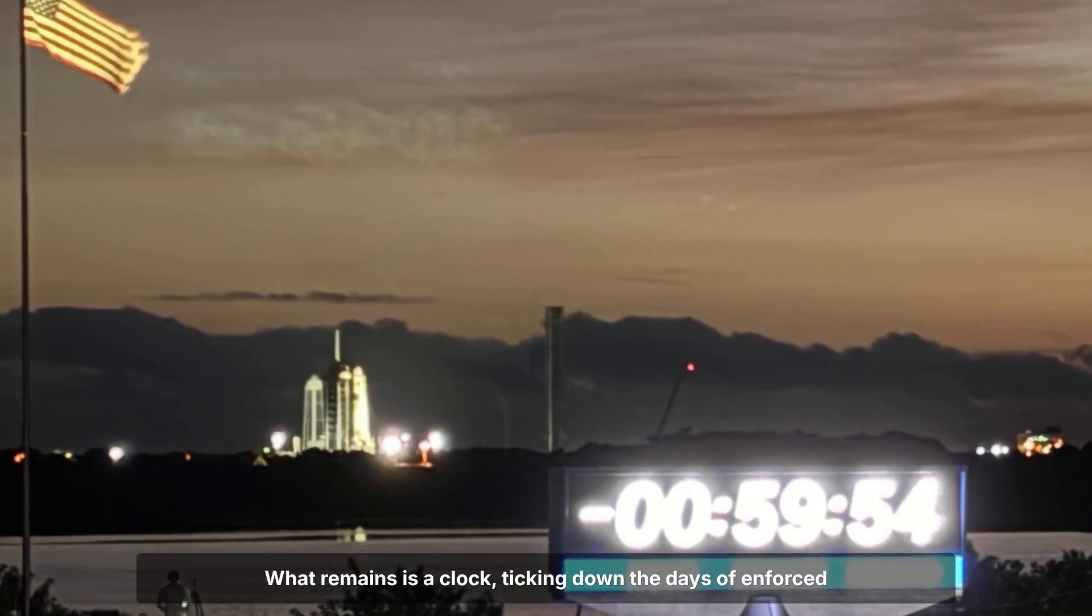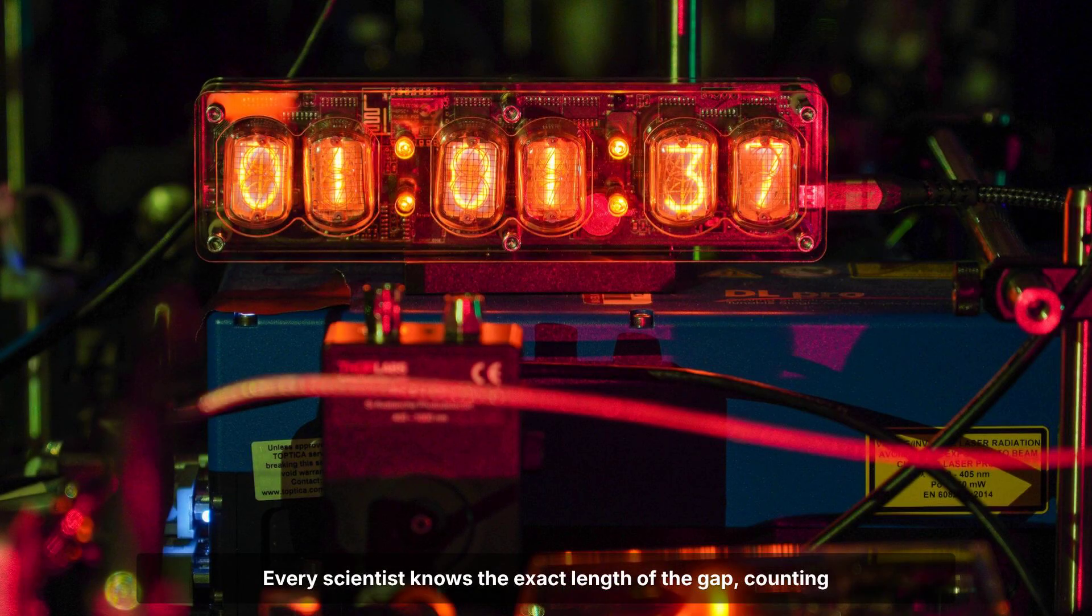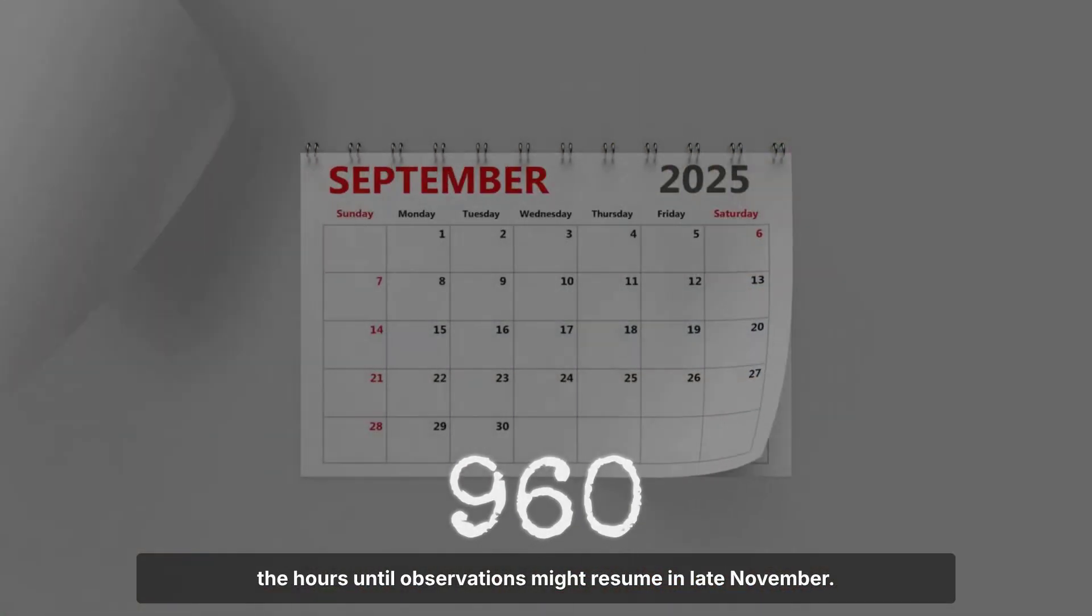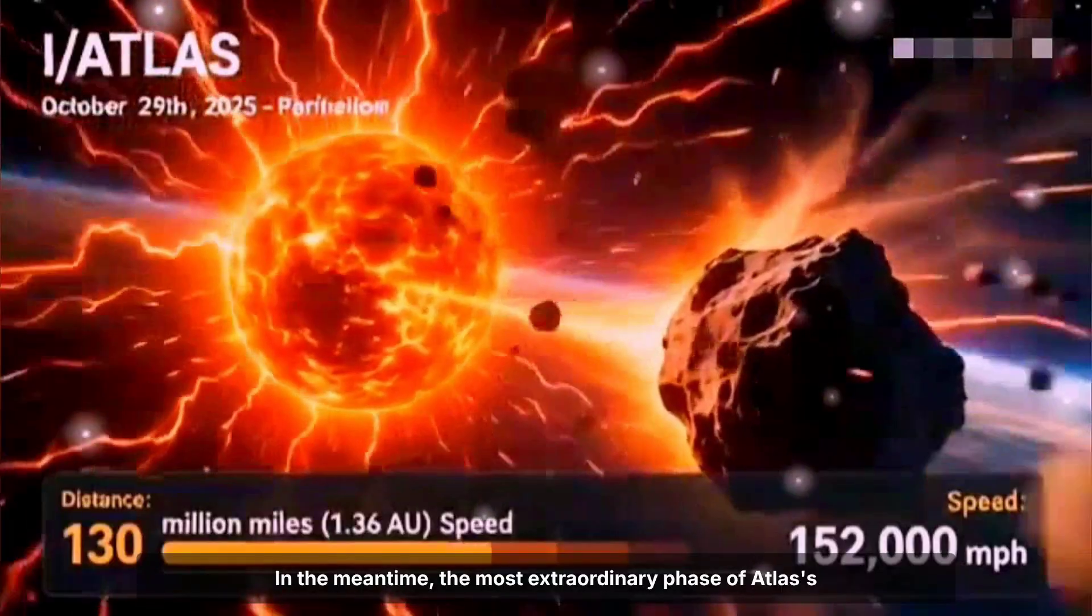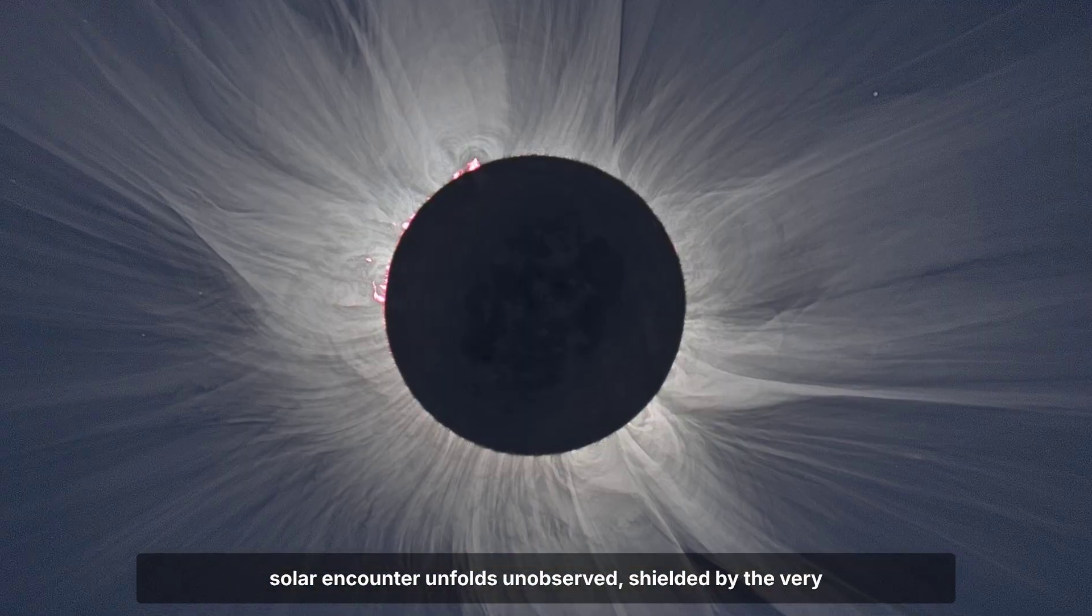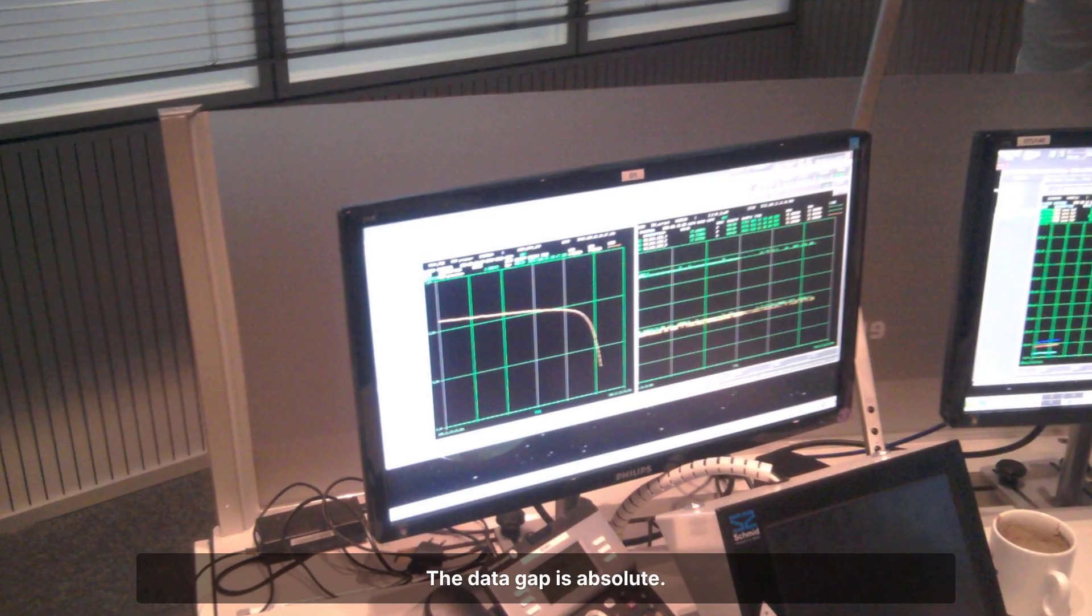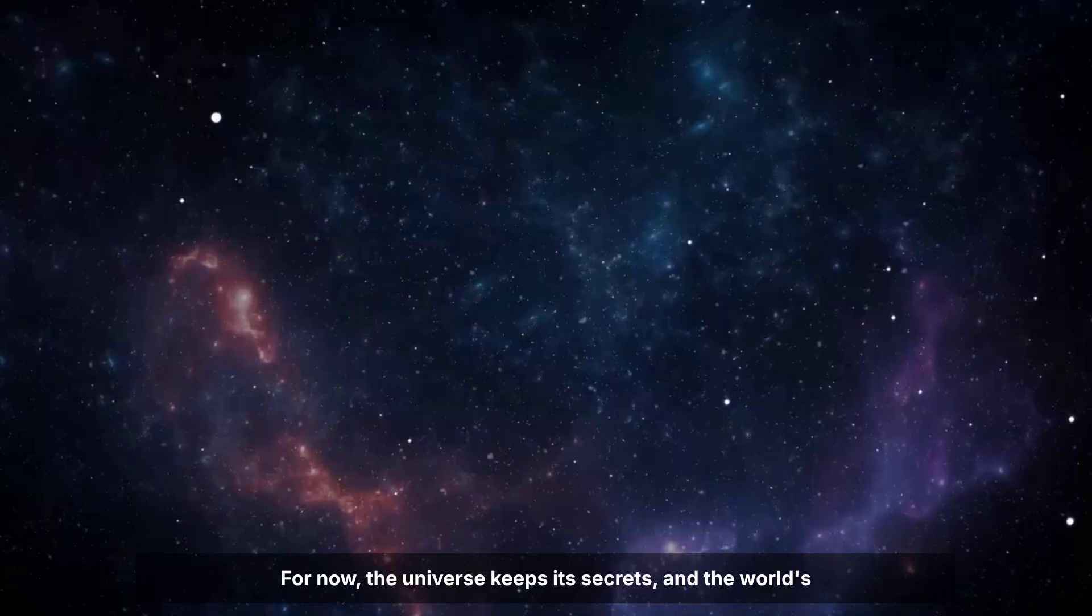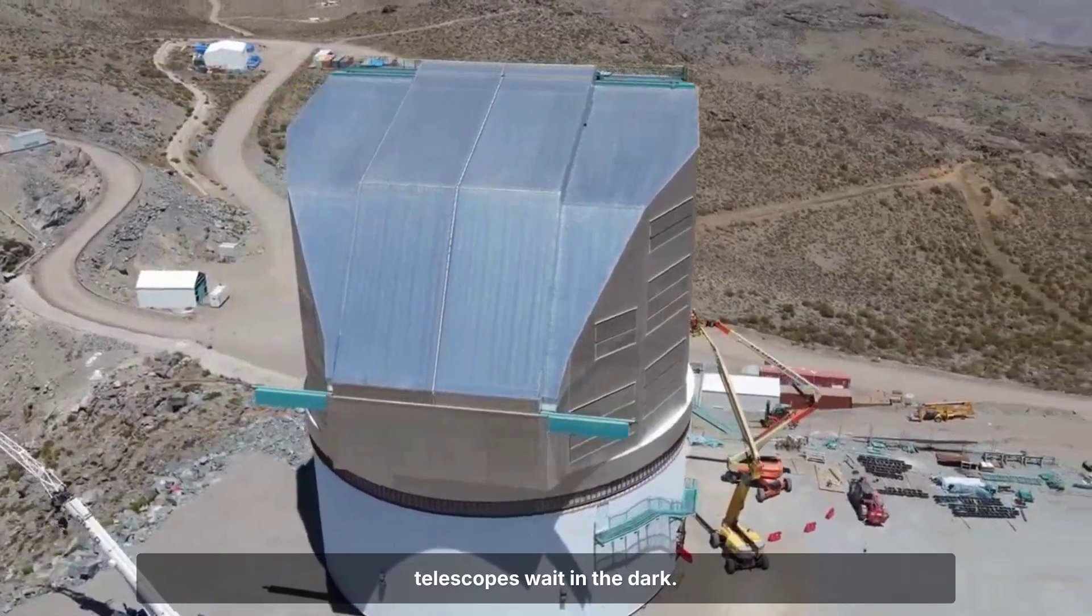What remains is a clock, ticking down the days of enforced silence. Every scientist knows the exact length of the gap, counting the hours until observations might resume in late November. In the meantime, the most extraordinary phase of Atlas's solar encounter unfolds unobserved, shielded by the very star whose gravity drew it in. The data gap is absolute. For now, the universe keeps its secrets, and the world's telescopes wait in the dark.